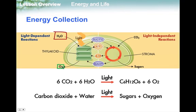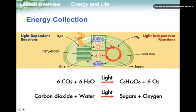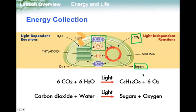So in the light-dependent reactions, all of the oxygen that we breathe is generated inside the thylakoids, and it eventually gets shipped outside the cell as waste. The hydrogens and their electrons get used, but the oxygen is a straight byproduct.